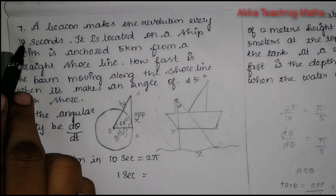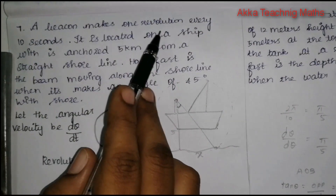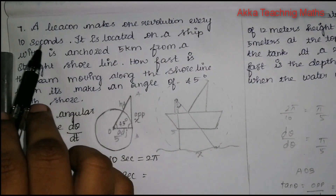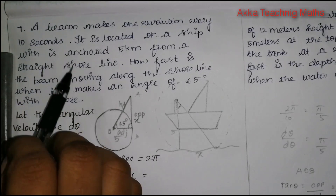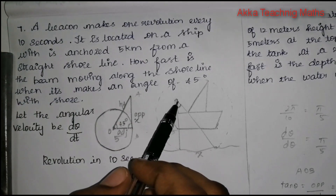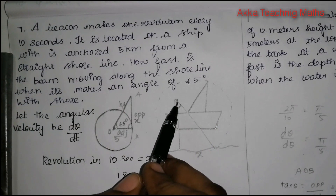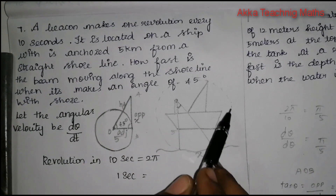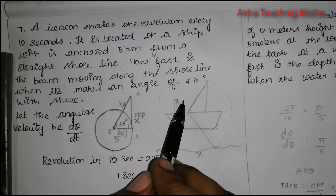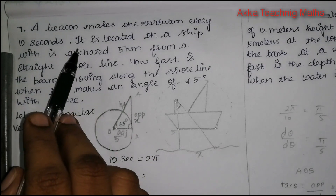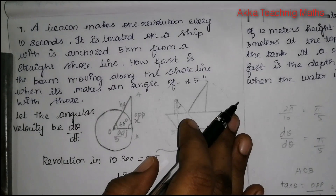So, 7th Question. A beacon makes one revolution every 10 seconds. The beacon is on one of the ships, so it can rotate the signal. This is the light — the light sweeps 360 degrees, and it is located on a ship.